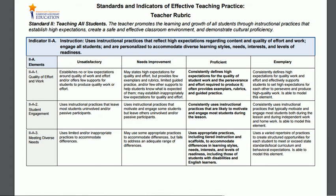Let's take a closer look at how the rubric performance descriptors can help an assessor rate a candidate on the dimensions of quality, scope, and consistency by looking at the proficient descriptor for the meeting diverse needs element: Uses appropriate practices, including tiered instruction and scaffolds, to accommodate differences in learning styles, needs, interests, and levels of readiness, including those of students with disabilities and English language learners. This descriptor signals the level of quality associated with proficient practice of this element. We want to see candidates who are adept at differentiating their practice to meet the needs of all learners, and the descriptor provides some examples of observable supports one might see, such as tiered instruction.